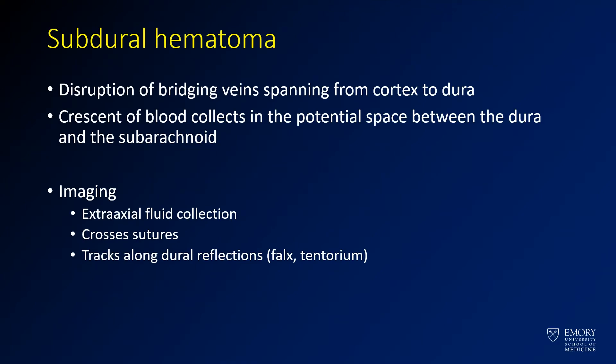This is a subdural hematoma. In subdural hematoma, you have disruption of bridging veins which span from the interior calvarium to the dura. In this case you get a crescent-shaped blood collection, collecting in the potential space between the dura and subarachnoid. Your imaging clues are: you have this extra-axial collection, it crosses sutures, and it tracks along dural reflections — so that can help you differentiate it from an epidural hematoma.